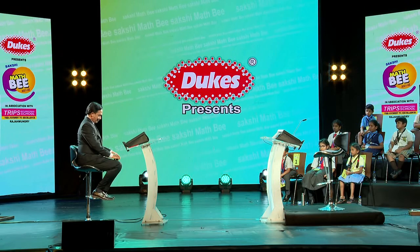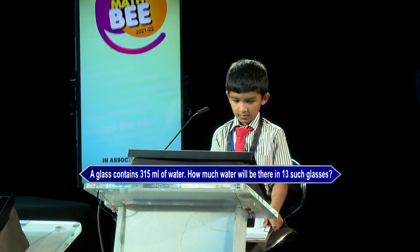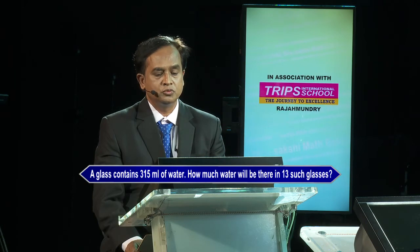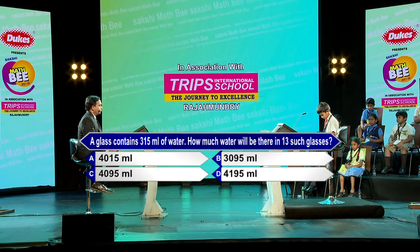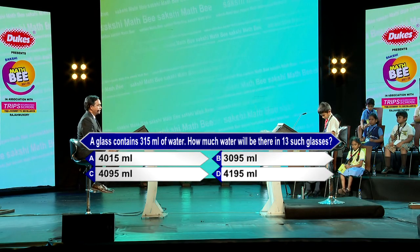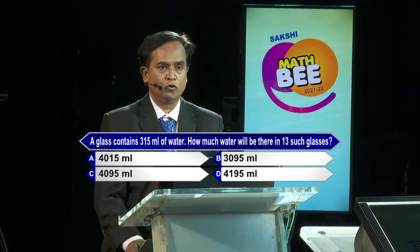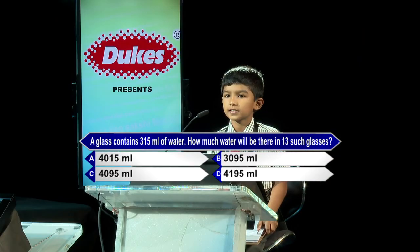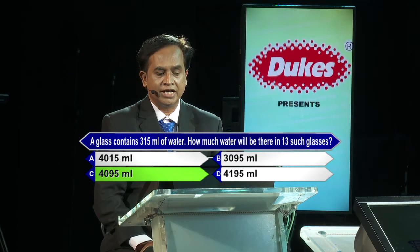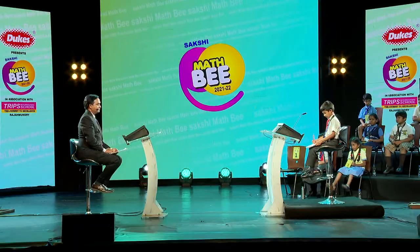I would like to start now. I call upon the first participant, Bihas Naidu. Can we have the first question please? A glass contains 315 ml of water. How much water will be there in 13 such glasses? Options: A) 4015 ml, B) 3095 ml, C) 4095 ml, D) 4195 ml. Brilliant — that is the correct answer.